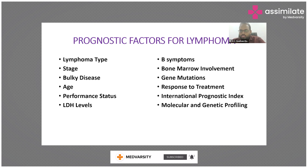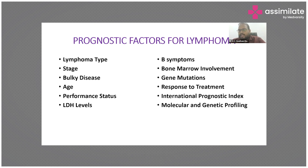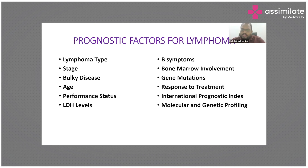In lymphomas, we usually use international prognostic scores for aggressive disease like diffuse large B cell lymphoma, for Hodgkin's lymphoma, and also for non-aggressive or indolent diseases like follicular lymphoma. Each one is given a separate prognostic score so that it will give us insight on how the lymphoma is going to behave in the near future.